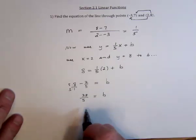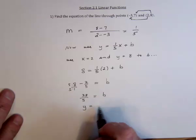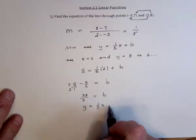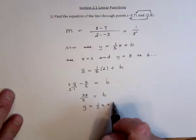And now we have our final answer that y is equal to, the slope was 1 fifth, and then the y-intercept b is 38 fifths.